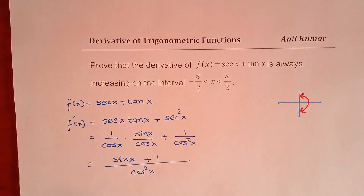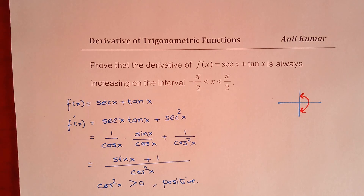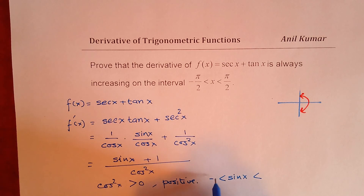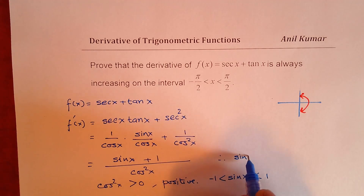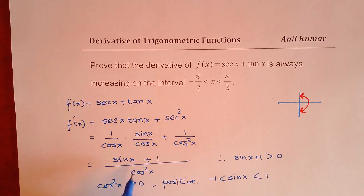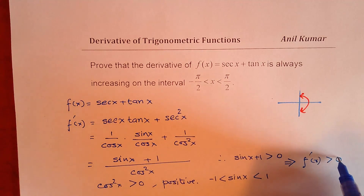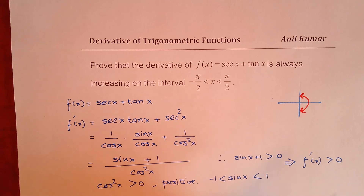What we know here is that cos squared x is always greater than 0 — that is positive. We also know that sin x is between minus 1 and plus 1. Therefore, we can say sin x plus 1 will be greater than 0. So that shows that both the numerator and denominator are positive. This implies that the derivative is greater than 0, and if the derivative is greater than 0, then the function is always increasing.